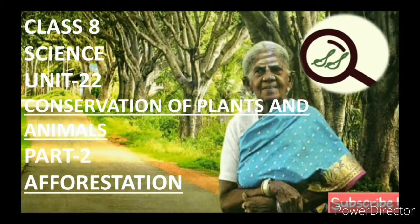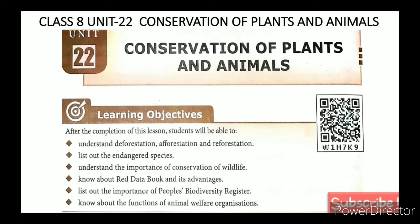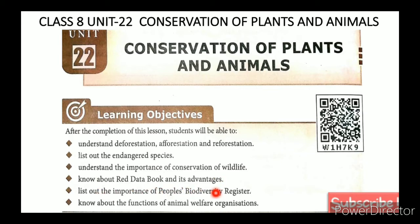Afforestation — Conservation of Plants and Animals. The lesson-level learning objectives are: Understand Deforestation, Afforestation and Reforestation; list out the endangered species; understand the importance of conservation of wildlife; know about the Red Data Book and its advantages; list out the importance of People's Biodiversity Register; know about the functions of Animal Welfare Organizations.